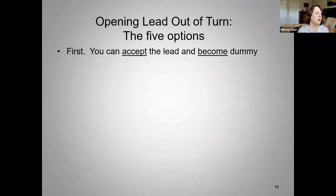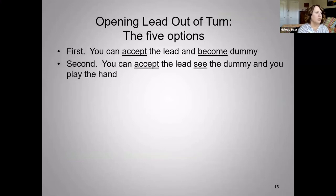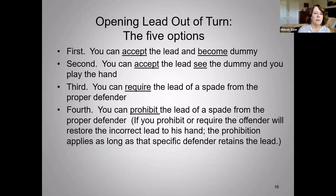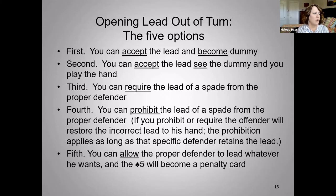Our five options are: you can accept the lead and become the dummy; you can accept the lead and see the dummy before you play the hand, playing next from your hand; you can require the lead of a spade from the proper defender; you can prohibit the lead of a spade from the proper defender as long as they hold the lead — either requiring or prohibiting puts that card back in their hand — or you can allow the proper defender to lead anything they'd like, and the five of spades is left on the table as a major penalty card.